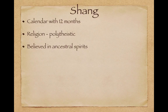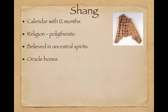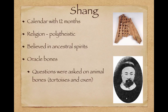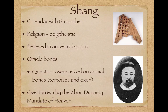The Shang created a calendar with 12 months. Their religion was polytheistic — they believed in many gods — and also in ancestral spirits. Oracle bones are really interesting: questions were written on animal bones or tortoise shells, placed into a fire, and the resulting cracks were interpreted by specialists to find answers to those questions.